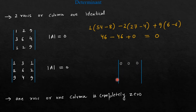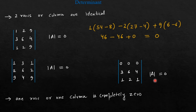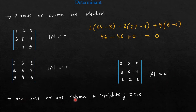Suppose we have a 3×3 determinant whose first row elements are 0, 0, 0, and the remaining rows are 3, 6, 4 and 1, 2, 1. The first row is completely 0. If you expand the determinant along the first row, then 0 into something is 0, minus 0 into something is 0, plus 0 into something is 0. All become 0, and hence the determinant will come out to be 0.